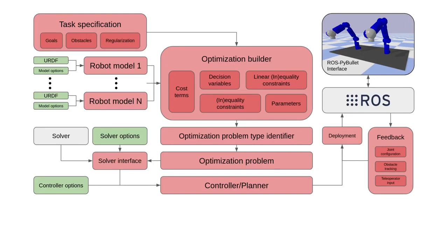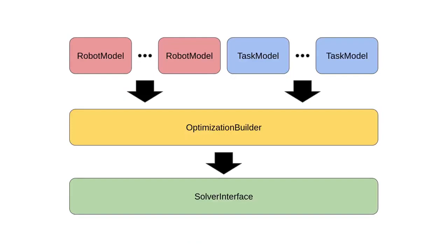We present Optas, a framework that provides an optimization-based task specification Python library. We build on top of CasADi, a framework for mathematical optimization, enabling us to provide function derivatives to the arbitrary order necessary for several optimization solvers. Optas provides facilities for rapid development and deployment of trajectory optimization approaches for multi-robot setups. It can be utilized to develop planners and controllers for custom trajectory optimization in the joint space, task space, or potentially a combination of both. The only additional information required by the user is a URDF for each robot and several controller and solver options. The framework includes a user-friendly class structure for specifying task objectives and constraints that automatically transcribe and build an optimization problem interface.